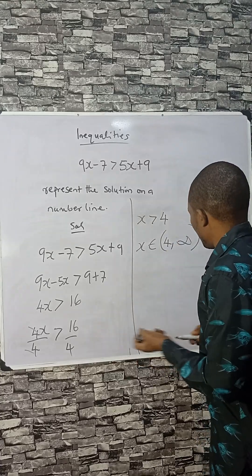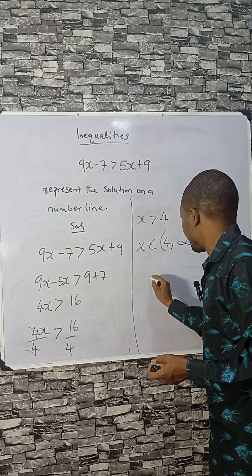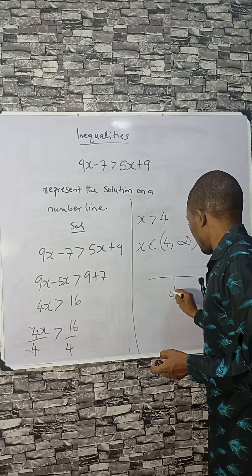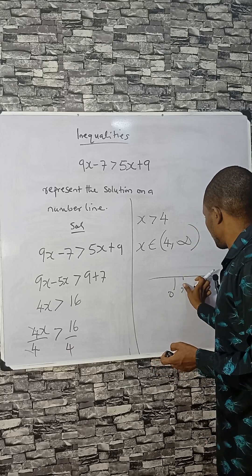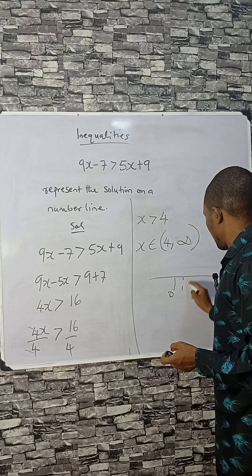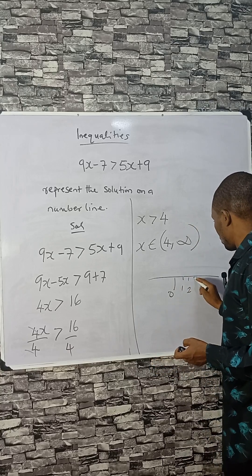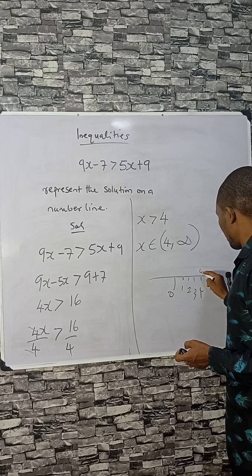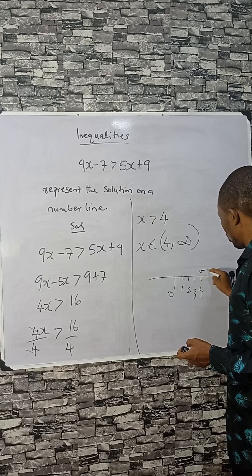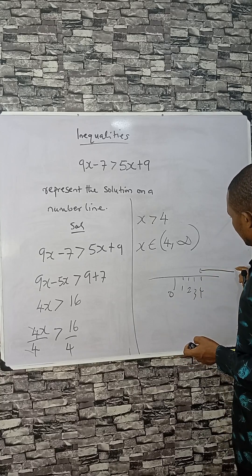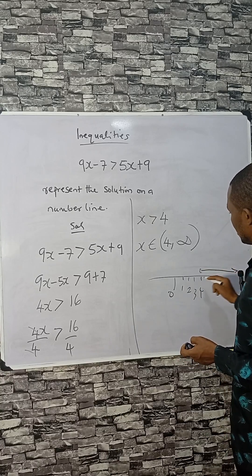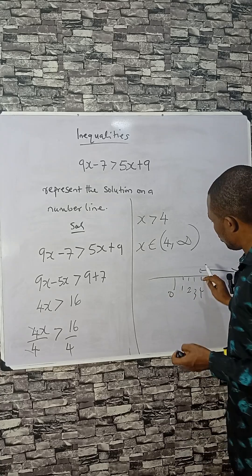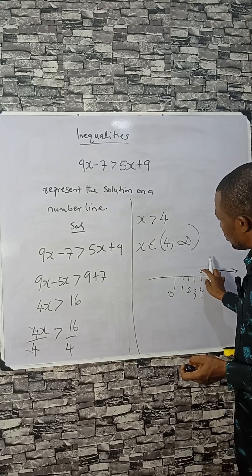Now let's represent this on a number line. We mark 1, 2, 3, and 4 — from 4 to positive infinity is the value of x.